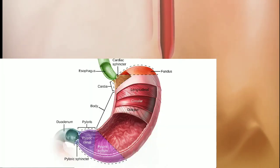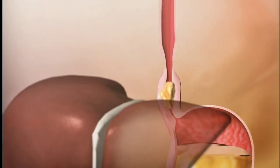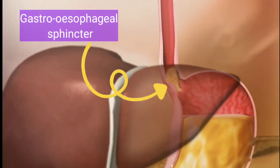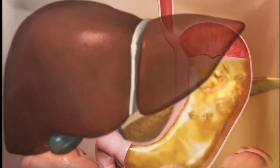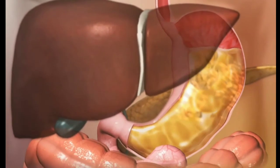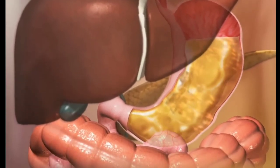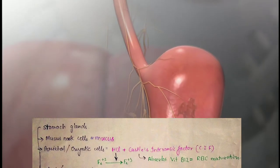Stomach has four main regions: cardiac, fundus, body, and pyloric. When bolus enters the stomach, the gastroesophageal sphincter, also known as cardiac sphincter, prevents the backflow of stomach contents. Here in the stomach, the food is mixed with gastric juices. Gastric juices have a pH of 1.5 to 2 and are secreted up to 2-3 liters per day by the gastric glands present in the stomach.